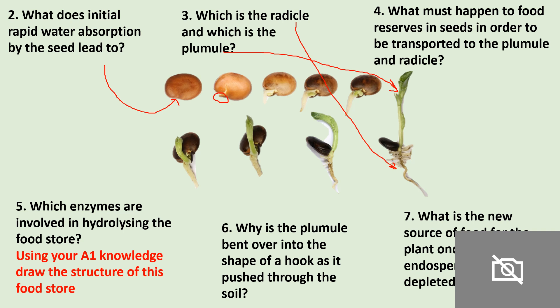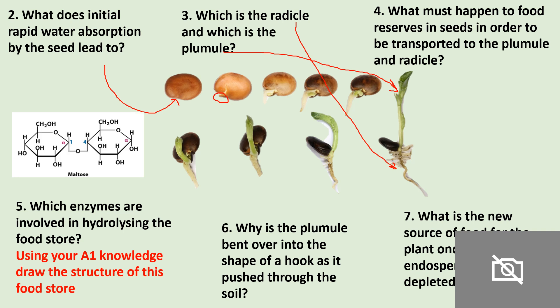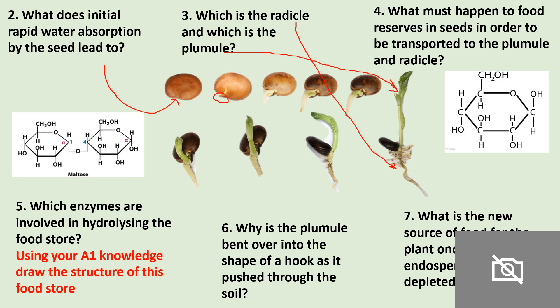What must happen to the reserves of food in the seed in order to be transported to the plumule? They need to be broken down into alpha glucose. The food reserve in this germinating broad bean seed is maltose, and the enzyme involved in hydrolysing this food store is maltase. Maltose is a disaccharide, and therefore maltase will break that glycosidic bond.